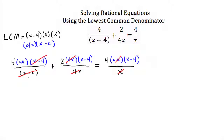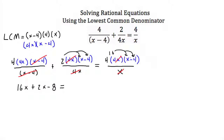What we're left with is 4 times 4x, which is 16x, plus 2 times x minus 4. Distributing the 2 inside gives 2x minus 8. That equals 4 times 4, which is 16, times x minus 4. Distributing 16 inside gives 16x minus 64.